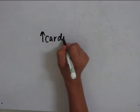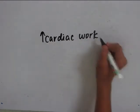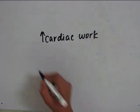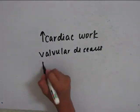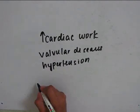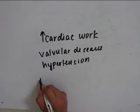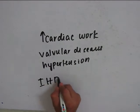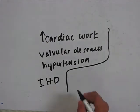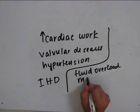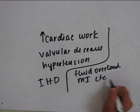I will tell you what are the causes for congestive heart failure. Usually, increase in cardiac work is the main cause of congestive heart failure. This can happen in valvular diseases or hypertension, or it can also be seen in ischemic heart disease, that is IHD. Other causes for precipitating CHF, that is congestive heart failure, are fluid overload, myocardial infarction, etc.